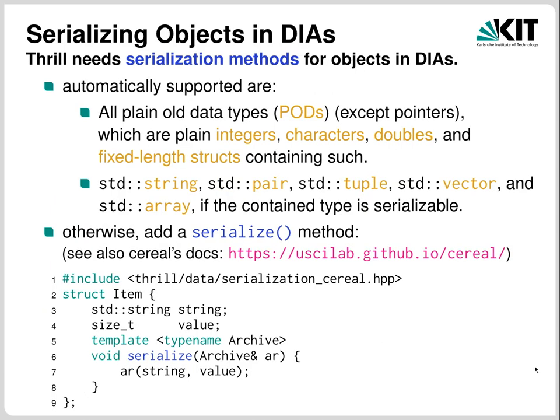Thrill's serialization mostly just works the way you think it should. The framework automatically works for PODs — plain old data types, which are integers, characters, doubles, floats, structs and classes containing only PODs. Fixed-size classes are PODs if they only have the default constructor. Many STL classes are also automatically serialized: strings, pairs, tuples, vectors and so on. The serialization format is trivial — trivial types are serialized as verbatim bytes, and for strings or vectors the number of characters or items is prefixed to the actual data.